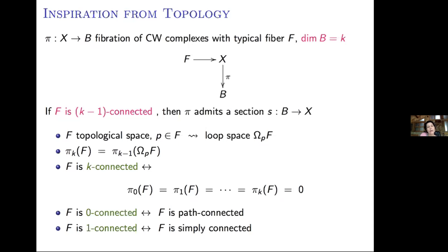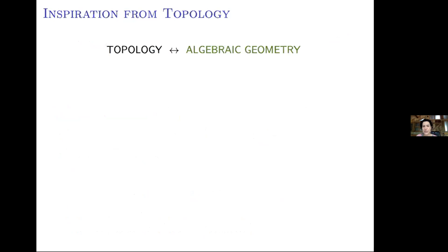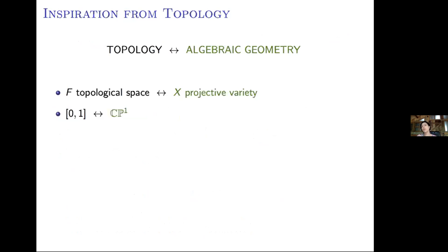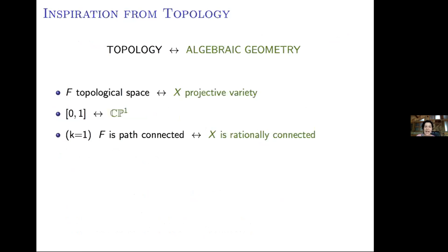Going from topology to algebraic geometry, we can create a dictionary as follows. Whenever we see a topological space F, replace it with a projective variety X. Whenever you see a closed interval [0,1], replace it with a rational curve CP^1. For the case k=1: what does it mean to say that F is path connected in algebraic geometry? This says that X is rationally connected — any two points can be connected by a rational curve.